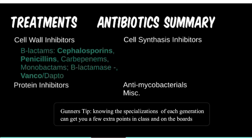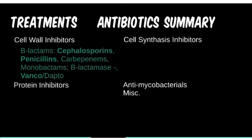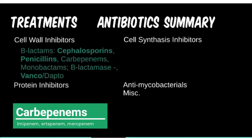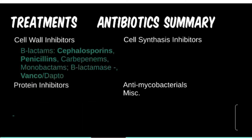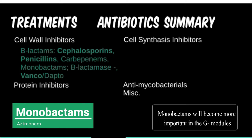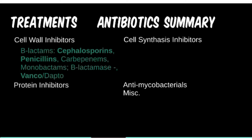Each generation within each class has a slight variation in specialization against certain bacteria, so it doesn't hurt to know this as well. The carbapenems are much less confusing, consisting of only a few commonly used medications, and this class has broad coverage for many organisms. The monobactam class consists of one drug — aztreonam — which unfortunately has no gram-positive coverage, making it more limited in scope than the others.